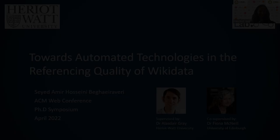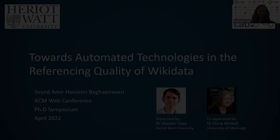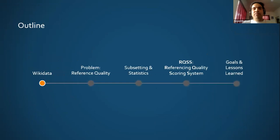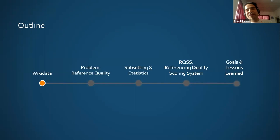Hello everyone. My name is Sayed and I'm a PhD student at a university's Semantic Web Lab. This is now more than two years I've been working on the quality of Wikidata references. My goal is to make maximum use of automatic technologies in evaluating and improving the quality of Wikidata references. To explain my journey so far, I'll start with briefly introducing Wikidata, then move on to the problem of referenceability, then explain two sub-projects we did last year facilitating our work, then explain our reference quality scoring framework — the main part of my research — and finally wrap up with lessons learned and goals.